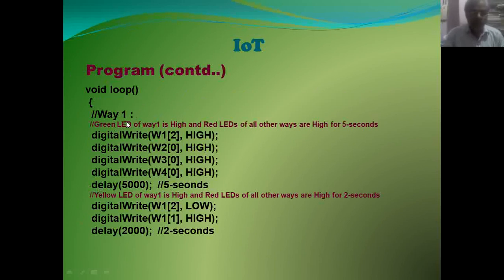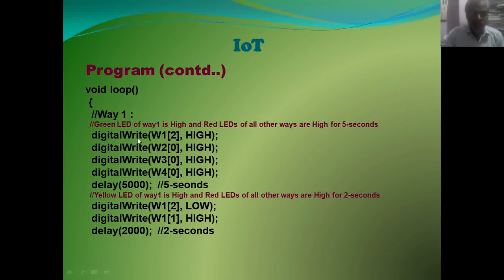In void loop, I have used four sections — one section for each root or way. In Way1, the green LED of Way1 is HIGH and red LEDs of all other ways are HIGH for 5 seconds, using the command delay(5000), since 1000 is 1 second. After 5 seconds, the yellow LED of root 1 or Way1 is HIGH and red LEDs of all other ways are HIGH for 2 seconds.